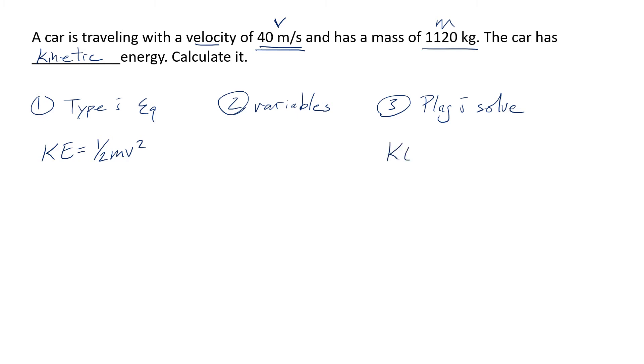And I already identified the variables 40 meters a second is my v and 1,120 kilograms is my mass. So I know that KE is equal to 1,120 kilograms times my velocity squared which is going to be 40 squared. So I saw that some of us have been squaring the whole bit. Don't do that just square the velocity. So here 40 squared is 1,600 times 1,120 divided by 2. Oh it is a ton of energy.